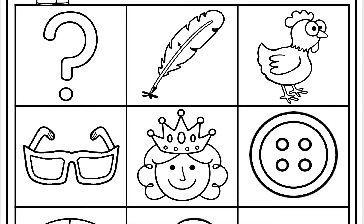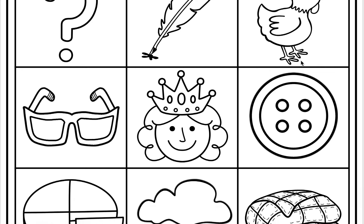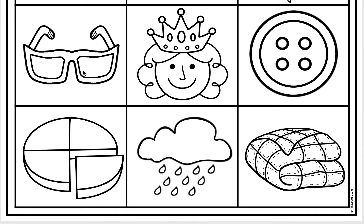Listen as I make the first sound in feather. That's right — this word does not begin with the coo sound, so let's move on. Listen as I make the first sound in chicken. That's right — this word does not start with a coo sound. Let's move on. Listen as I make the first sound in glasses. That's right — this word does not make the coo sound. Let's move on.